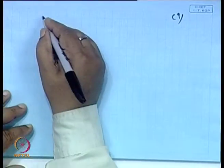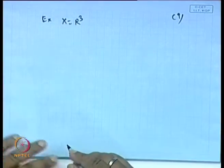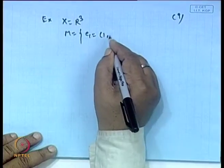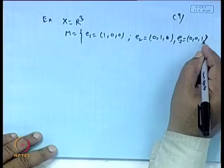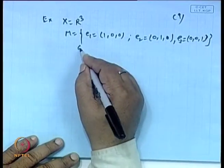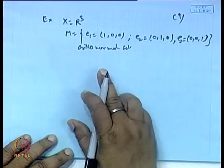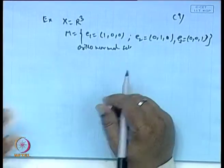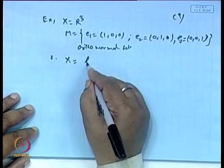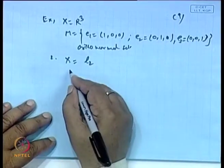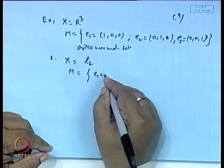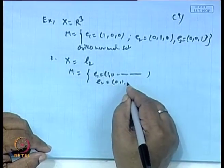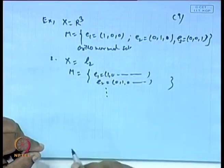For example, in R³ the set M = {E₁=(1,0,0), E₂=(0,1,0), E₃=(0,0,1)} is an orthonormal set — each has norm 1 and they are at right angles. In ℓ², the orthonormal sequence is E₁=(1,0,0,...), E₂=(0,1,0,...), and so on. In the inner product space X of real-valued continuous functions on [0, 2π] with inner product ⟨x, y⟩ = ∫₀²π x(t)y(t)dt, the functions uₙ(t) = cos(nt) form an orthogonal sequence.